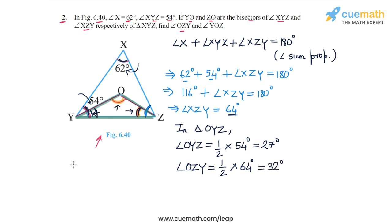So we have angle, this angle, which is YOZ. So YOZ plus angle OYZ plus angle OZY. So the sum of these three angles must be equal to 180 degrees. And this is because we're applying the angle sum property to triangle OYZ. So angle YOZ plus OYZ is this angle is 27. And this angle OZY is 32. So 27 plus 32, this is equal to 180 degrees.